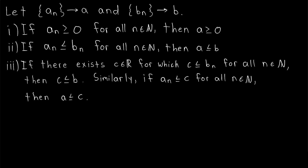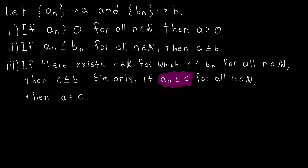There are three statements to this theorem. We're letting a_n and b_n be convergent sequences, a_n converging to a and b_n converging to b. The first statement is that if every term of a convergent sequence is at least zero, then the limit is also at least zero. The second is if every term of one convergent sequence is less than or equal to another convergent sequence, then their limits have that same relation: a is less than or equal to b. The third is that if a convergent sequence is bounded below by some real number, then the limit is at least as big as that lower bound, and similarly bounded above implies the limit is at most that upper bound.